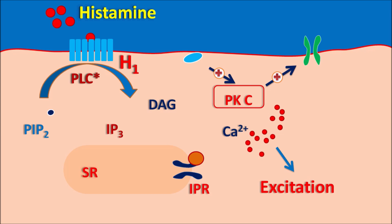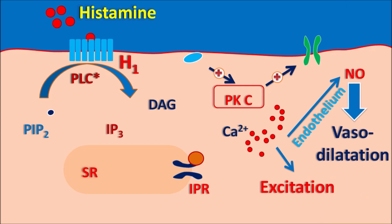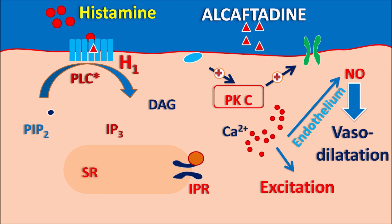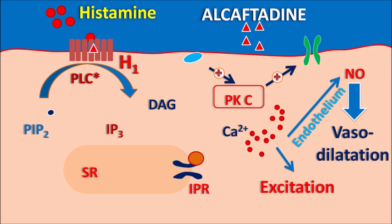If the target cell is a neuron, it is excited to produce an increased itching response. Similarly, raised calcium levels can activate the endothelium so that it releases nitric oxide, producing vasodilation and redness of the eye. In this way histamine produces the allergic response. Alcaftadine binds to H1 receptors, thereby inhibiting histamine activity. When these receptors are inactivated, the allergic response is inhibited. This drug can also reduce chemotaxis as well as activation of eosinophils. By all these actions, Alcaftadine can reduce the symptoms of conjunctivitis.